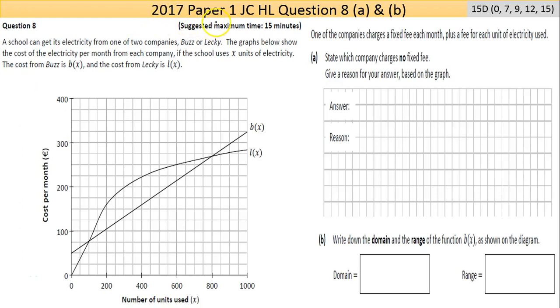Hi and welcome to 2017 Paper 1 of the Junior Certificate Higher Level, that's Question 8 we're looking at now. Parts A and B here are marked together for 15 marks, so it's a good chance to get somewhere in the middle or upper.